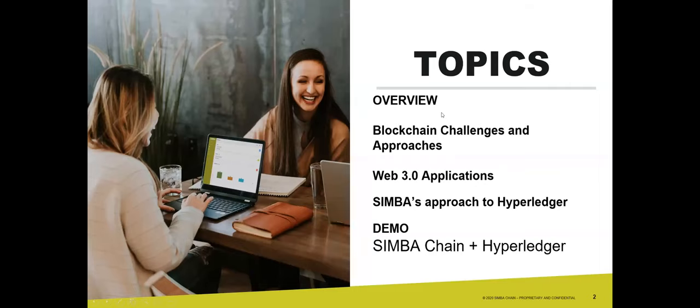The plan is we're going to talk about general blockchain challenges and approaches based on our experience. Tommy will talk about his take on Web 3.0 applications and some big-picture trends. Then Adam will speak to Simba Chain's approach to Hyperledger, especially our graph-based approach. Finally, Tommy and Adam will give you a demo of the Simba Chain platform — particularly our new enterprise release — including the Hyperledger portion and how our graph-based approach extends our traditional approach.